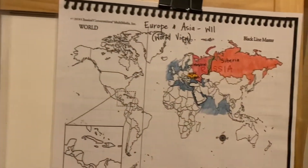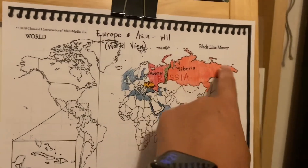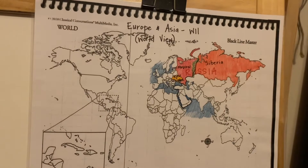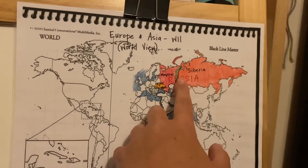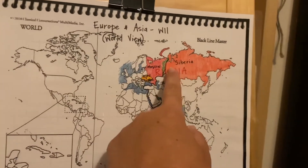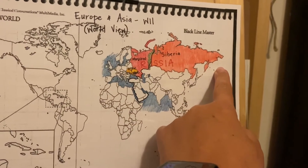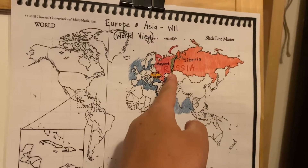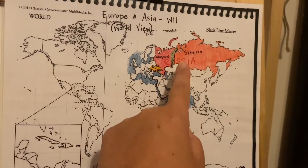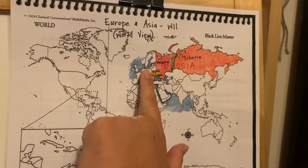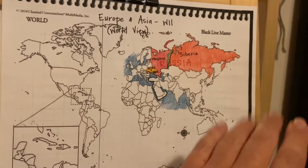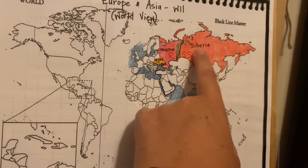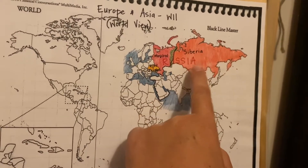I want to show you this world map. This is the area we're talking about — Russia. I did not know until I started CC that Russia is actually in two continents. Russia is both in Europe and Asia. Europe is divided right here by the Ural Mountains, which create a natural land border dividing European Russia and Asian Russia.